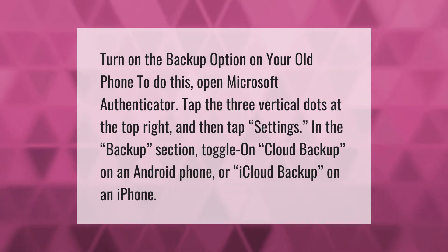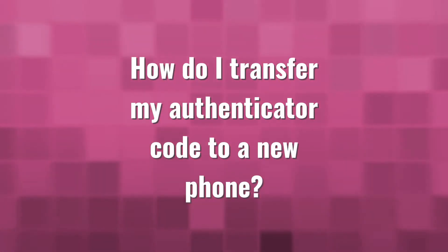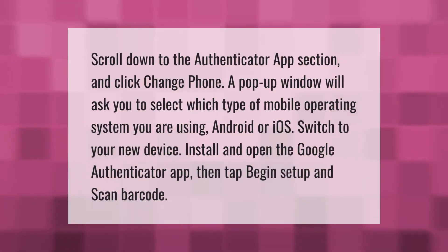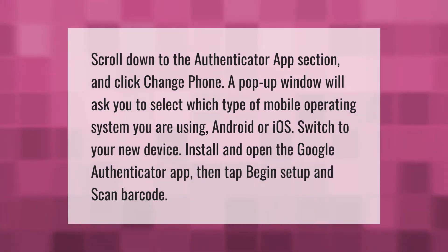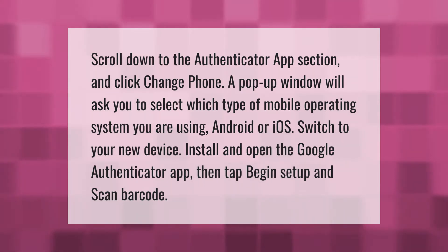Scroll down to the Authenticator app section and click Change Phone. A pop-up window will ask you to select which type of mobile operating system you are using — Android or iOS.